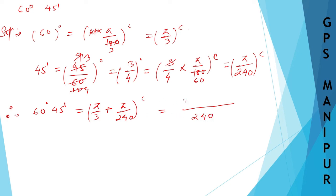So it is π over 240. 80π plus π will be 81π by 240.